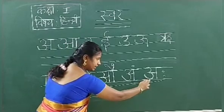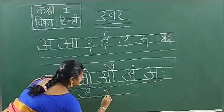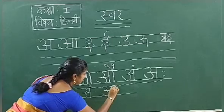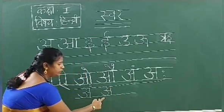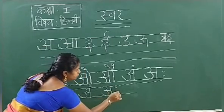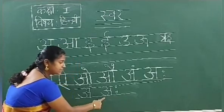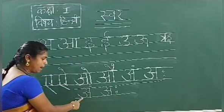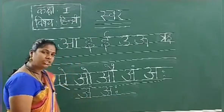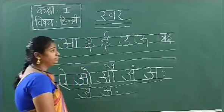Next, A. Now you have to write A. You have to write A. Next, two dots we should keep. What is this? This is A. A. Now you have to write A. This is correct.